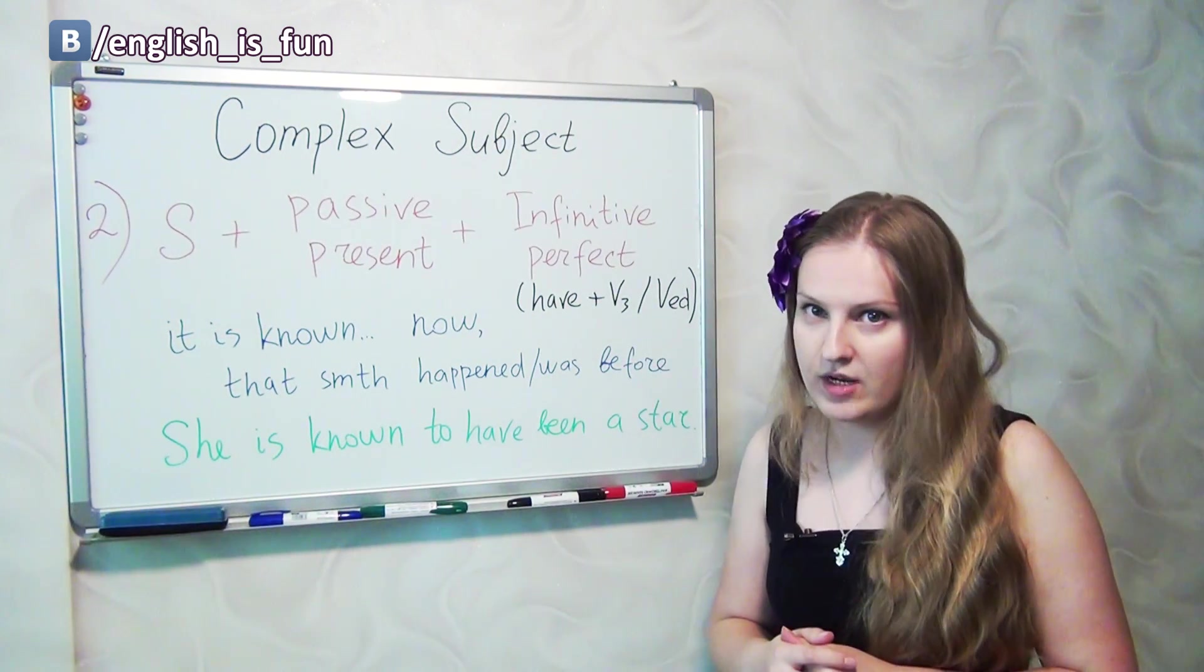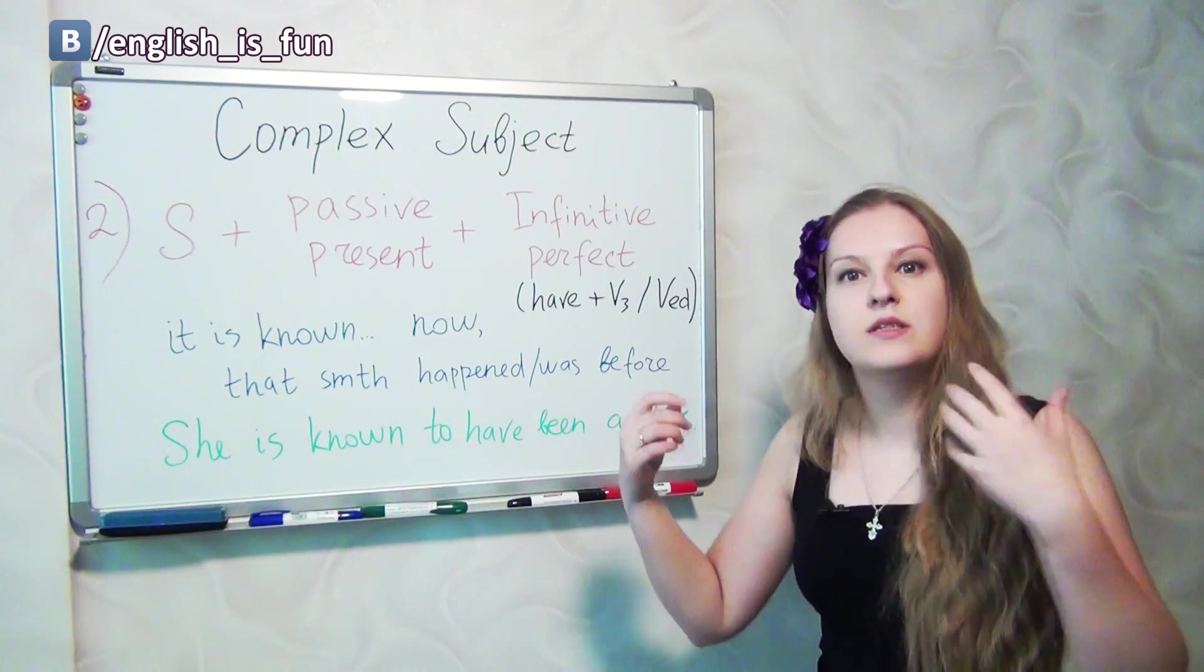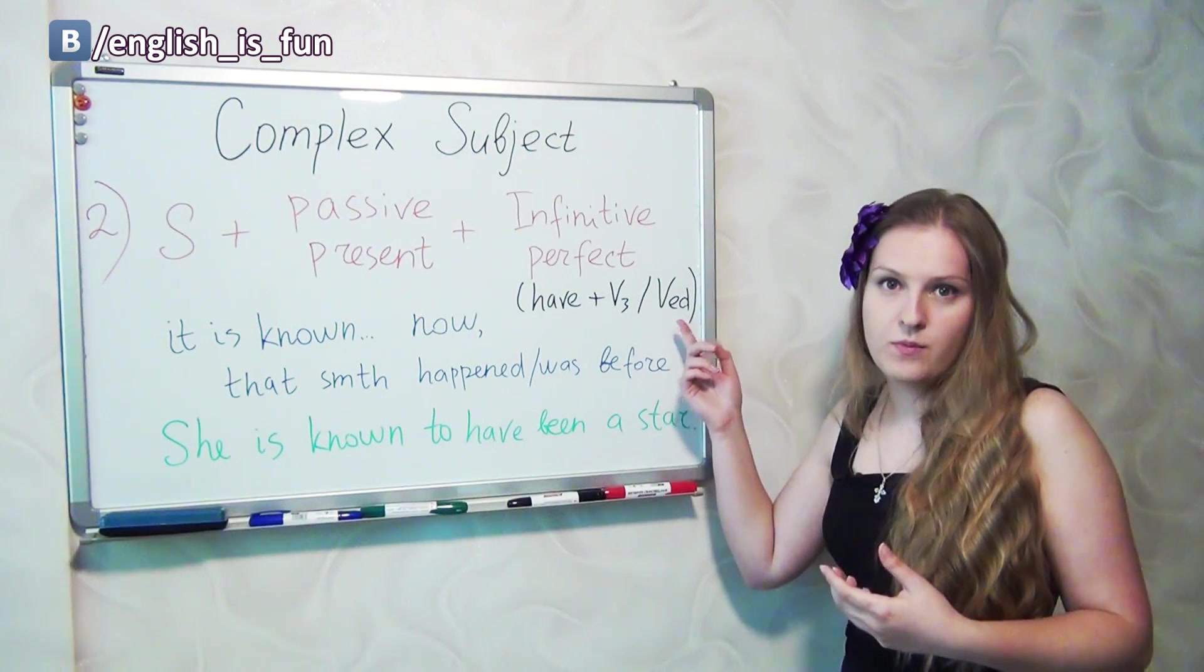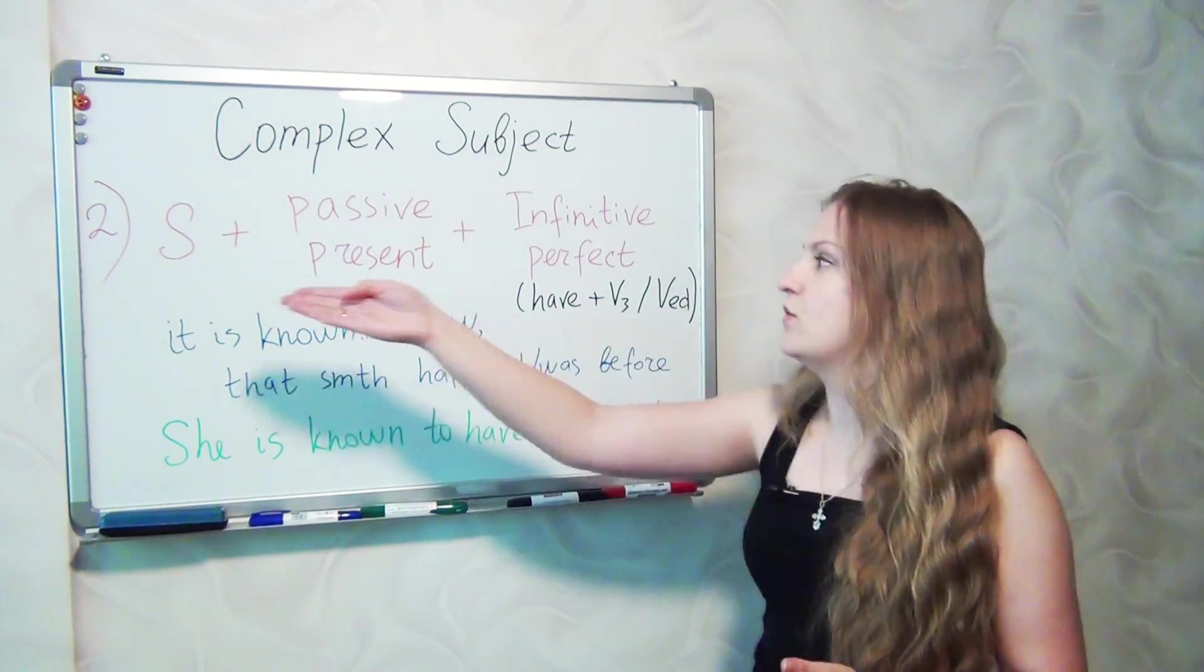So you use have plus the verb in the third form, if it is an irregular verb like make, made, made, or take, took, taken, or a verb with an ending ed. So that's a perfect infinitive, so use this construction.